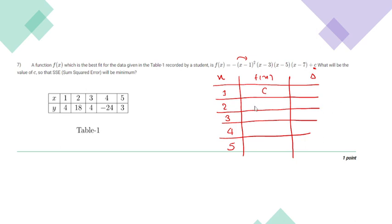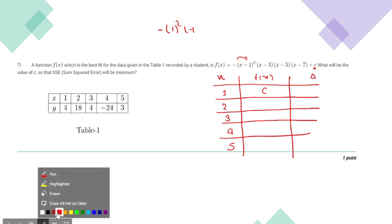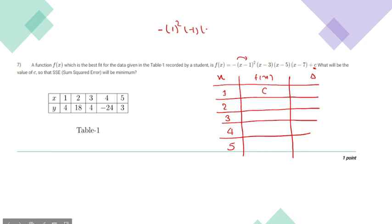If we substitute x equals 2, it will become negative times (2 minus 1) squared, minus 1, times negative 3 and negative 5, plus c. So this will become 15 plus c.